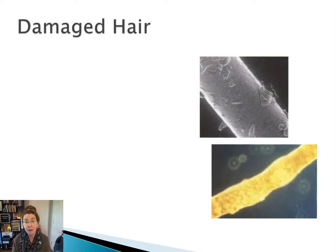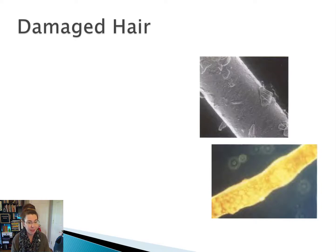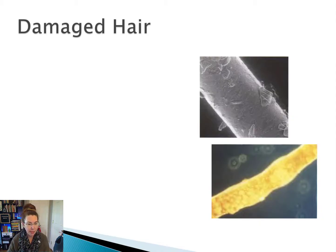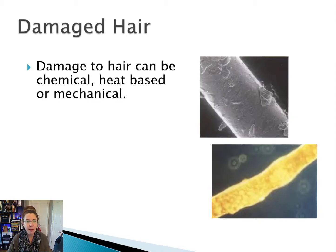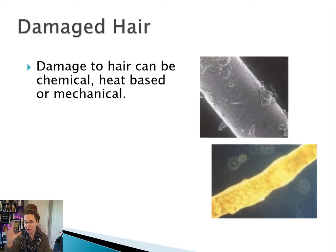One of the things that's very evident when you look at a hair underneath the microscope is whether there are any types of damage to that hair. Hair damage can be chemical, it can be heat-based, or it can be mechanical. We're going to talk about several different types of this damage.